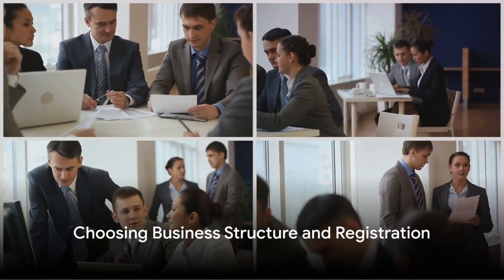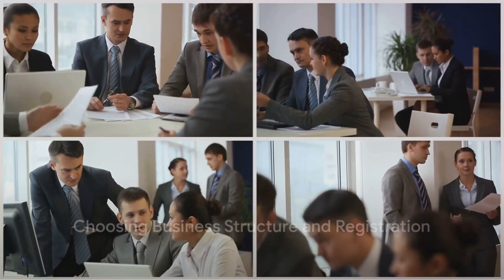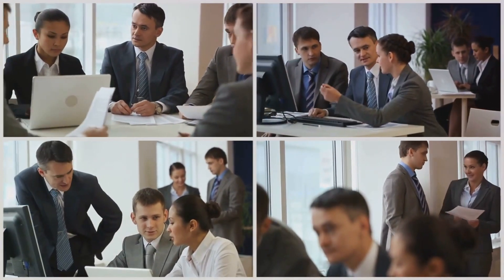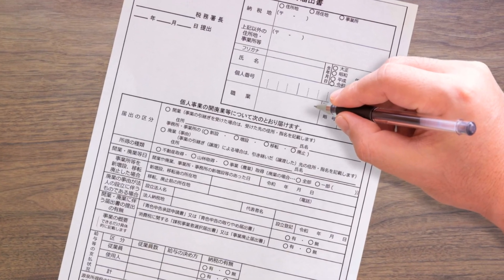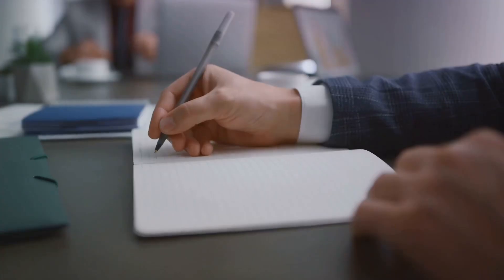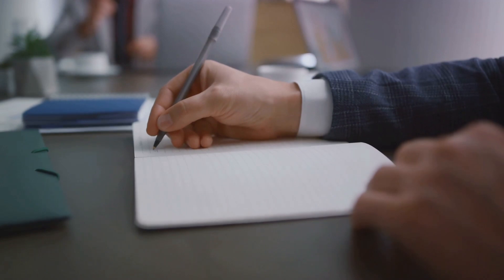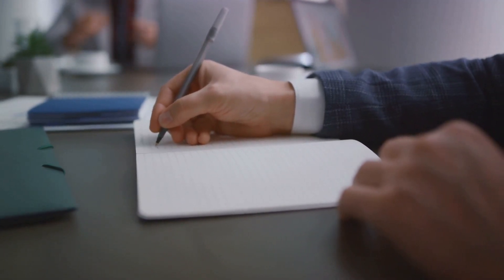Next, you need to decide on the type of business structure you want to set up. You have three options: a sole trader, a partnership, or a limited company. Each has its pros and cons, so weigh them carefully.